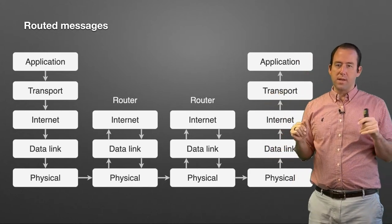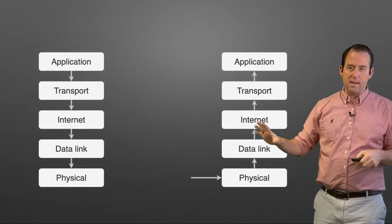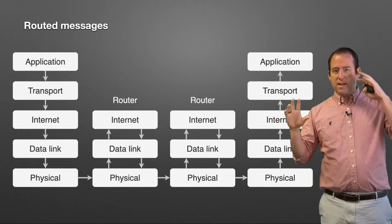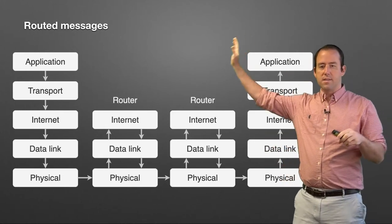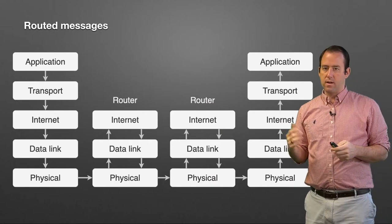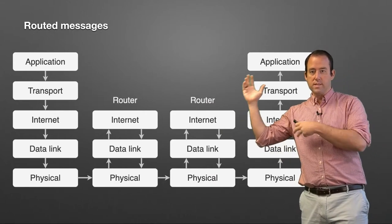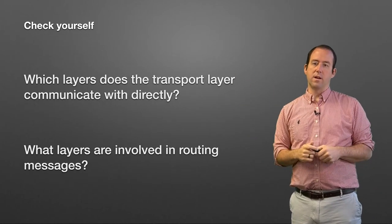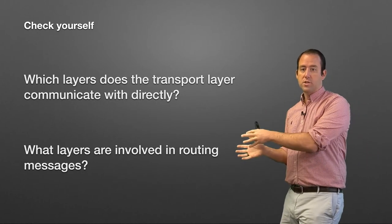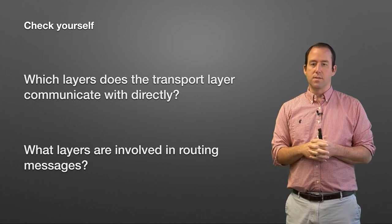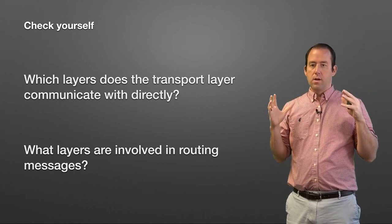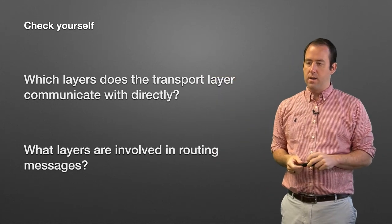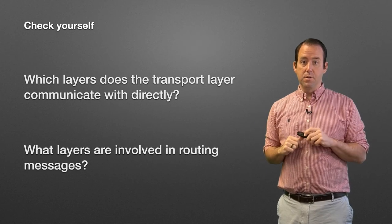It's not always going to be as simple as this. Many times you'll have a lot of other devices in between managing things. Keep this in mind as we move forward — when we get to routers, think about what role they're playing as they're passing things along. That's essentially how these layers are used and how they communicate with each other. Check yourself: which layers does the transport layer communicate with directly? Which layers are involved in routing messages across a network? Think about how communication works both within the stack on a single device and between devices across the network.